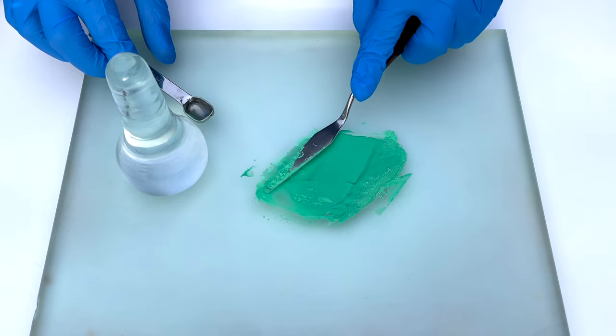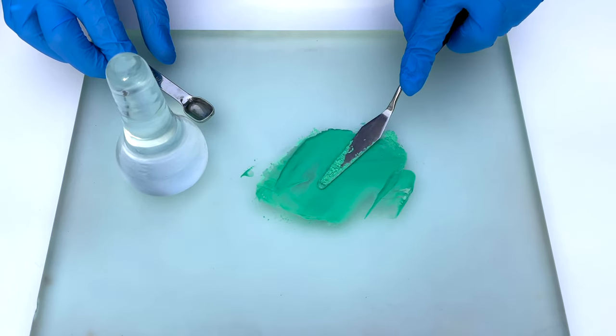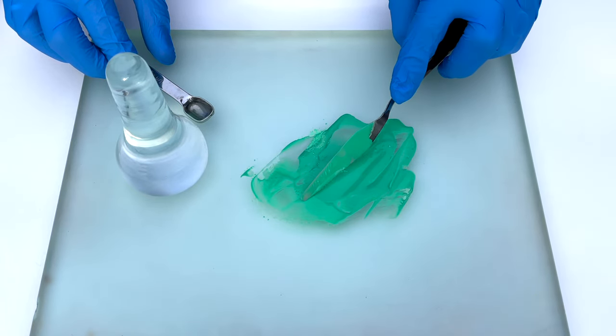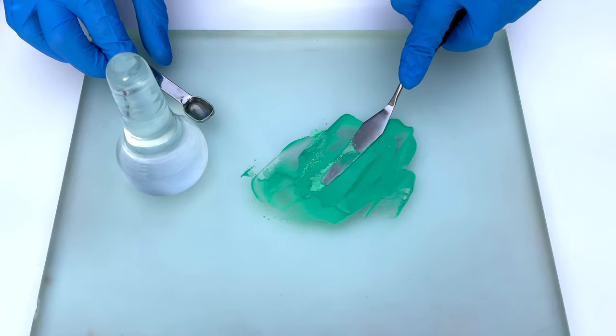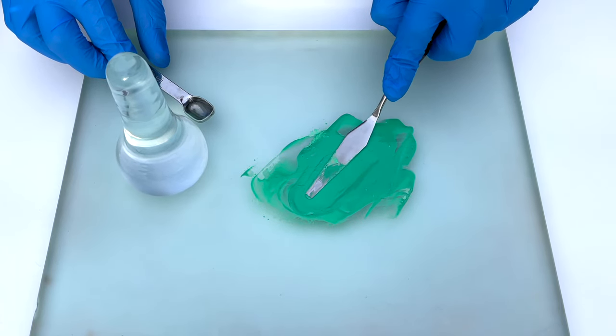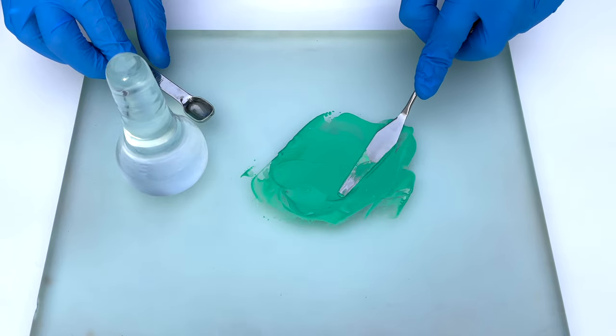This pigment was developed in 1808 as an improved version of Scheele's Green. It was more durable, since this is a copper acetoarsenite, but the arsenic in it, in combination with the copper, still made it very toxic.